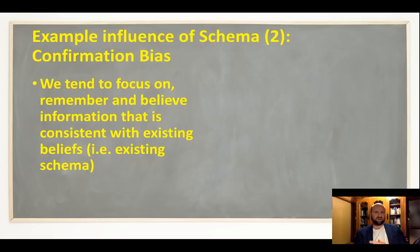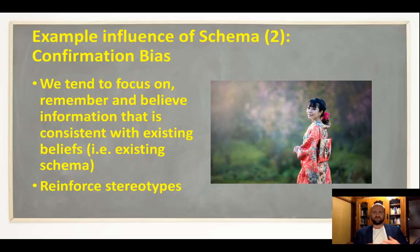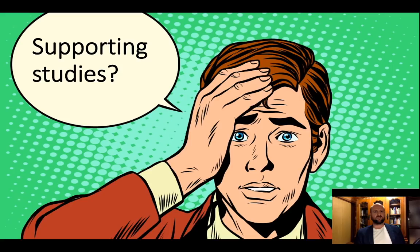In the realm of stereotypes, confirmation bias can reinforce the stereotype. For example, if you meet a few Japanese women and some are behaving consistently with your stereotype while others challenge it, there's a tendency to notice and focus on the behaviors consistent with your existing beliefs. That will reinforce the stereotype, for better or worse. This is one way schemas can influence our cognition.